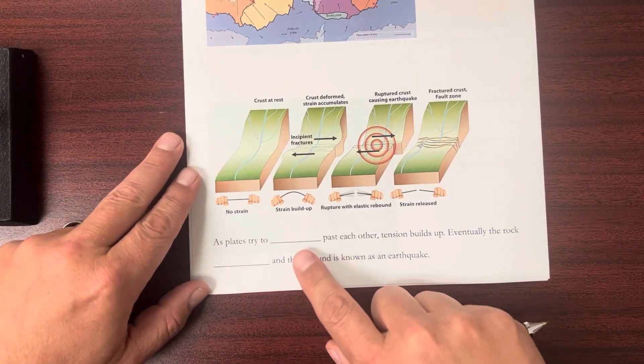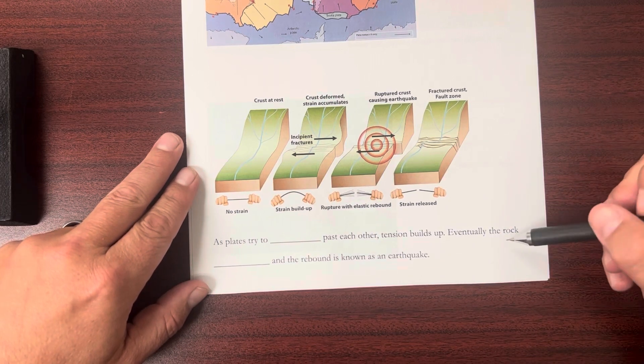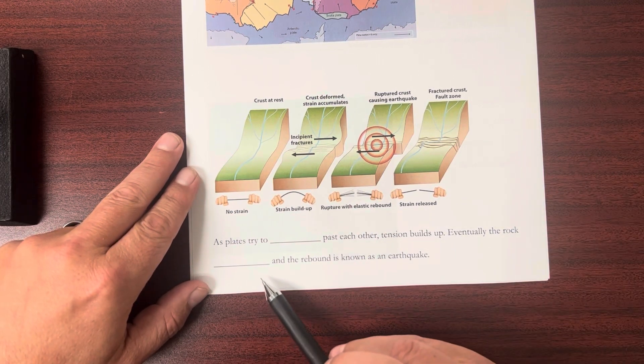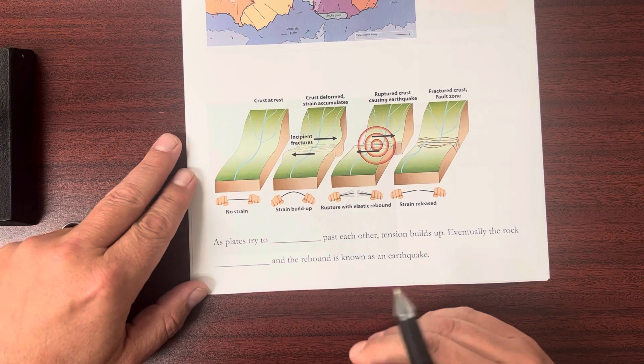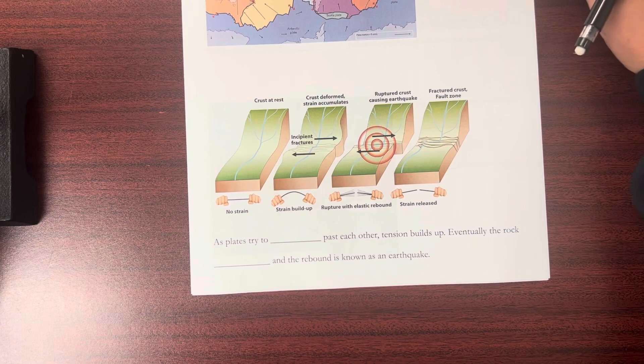So as plates try to slide past each other, tension builds up. Eventually the rock breaks and that rebound is known as an earthquake. So it's that release of tension. When that happens, that is an actual earthquake.